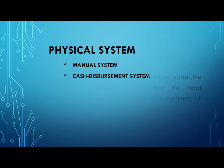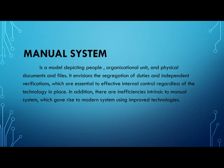Physical system has two main components: the manual system and the cash disbursement system. The manual system is a model depicting people, organizational units, physical documents, and files. It envisions the segregation of duties and independent verifications essential to effective internal control regardless of the technology in place. In addition, there are inefficiencies intrinsic to manual systems, which gave rise to modern systems using improved technologies.